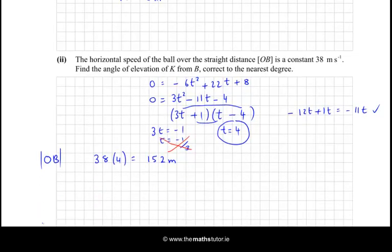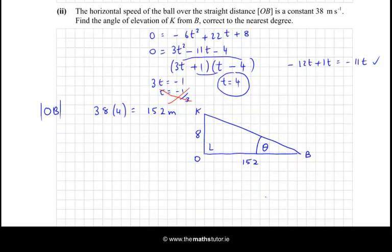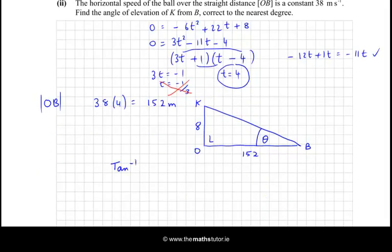OK, so now we have a triangle, quite an easy triangle to solve, because it's right angled. It looks like this, with 8 here, it's a right angle, 152 here, and we're asked to find the angle of elevation of K from B. So, in other words, we're asked to find this angle here. So, let's call that θ, and we just go tan⁻¹ of 8 over 152 = θ. So, θ = 3.01 degrees. Make sure your calculator is set to degrees. So, θ is approximately equal to 3 degrees, because we were asked for it to the nearest degree.